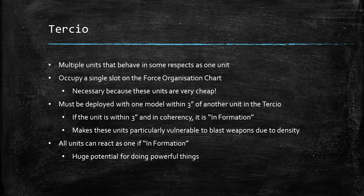The tertio rule is a special rule that changes the way infantry in your army are taken and how they work on the tabletop. Effectively it's multiple units that behave in some respects like one unit — they occupy a single slot on the force organization chart, which is necessary because these units are so cheap you'd fill your force org and still have lots of points left. Generally you'll have a command unit, and then a number of elite or basic troops that all form part of the tertio.